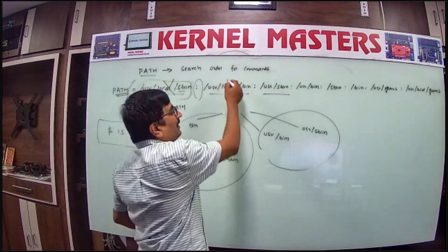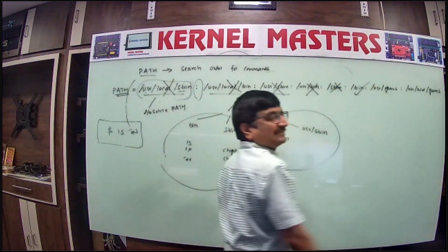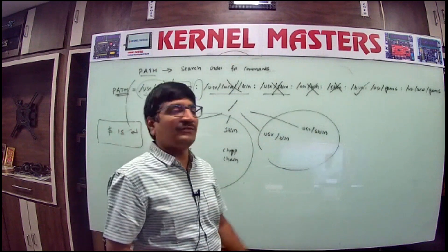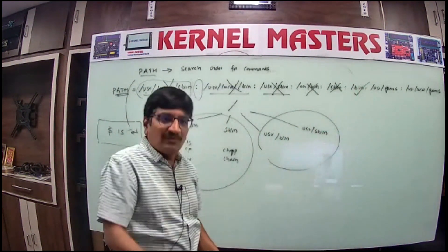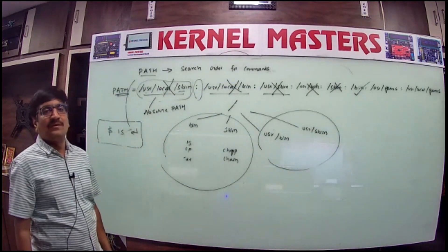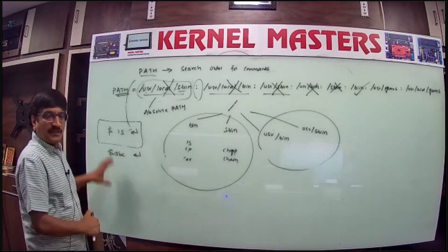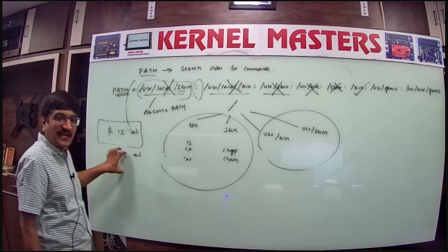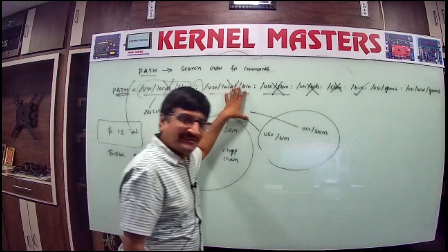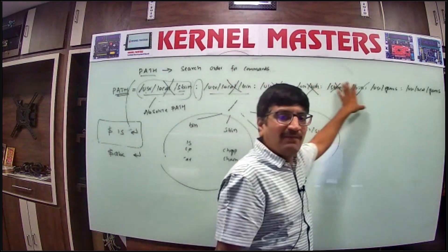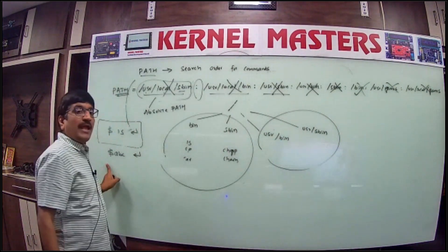If the command is not in the second path, it fails and moves to the next. This continues until it finds a match. If the command is found — for example, ls is in /bin — that is success. The shell takes the ls command from there, executes it, and shows the result. But if you type a command like 'abc' that doesn't exist anywhere, the shell searches all paths and finds nothing.